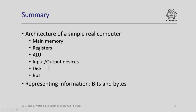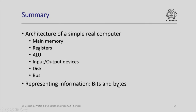In summary, what we saw in this lecture is the architecture of a simple but real computer. The main parts are main memory, registers, an arithmetic logic unit, input/output devices, disk, bus, and a controller — which along with the arithmetic logic unit constitutes the central processing unit. We have also seen that information is represented in a computer using 0s and 1s called bits, and we access bits in chunks of 8 bits at a time, which are called bytes.